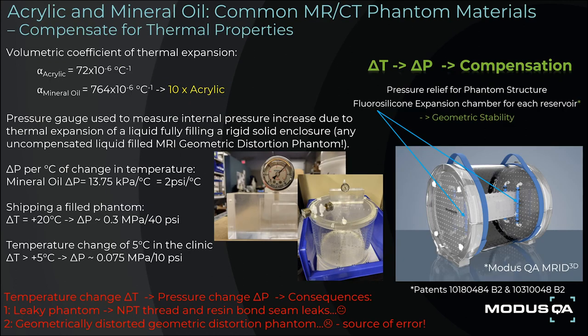Liquid-filled plastic phantom structures in general have a mismatch between the volume coefficient of thermal expansions of the plastic and liquid contrast media. This can be verified by attaching a pressure gauge to measure internal pressure increase due to thermal expansion of a liquid fully filling a rigid plastic enclosure, such as any uncompensated liquid-filled MRI geometric distortion phantom. A 20 degree Celsius increase in temperature in some cases results in an internal phantom pressure of 0.3 MPa or 40 psi. The resulting internal pressure buildup is sufficient to cause deformation of the phantom walls, inducing geometric distortion. This source of error can be mitigated using pressure-compensating expansion chambers designed into the phantom. The fluorosilicone rubber tube expansion chambers function to maintain low pressure within the phantom and divert thermally induced liquid expansion to a flexible elastomer tube while stabilizing the critical plastic structures and fiducial positions, maintaining critical geometric stability of the phantom with temperature increases.